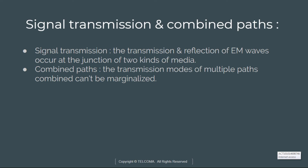Signal transmission refers to the transmission and reflection of EM waves which occur at a junction of two kinds of media. The transmission energy is related to the dielectric constant, movement, and permeability of the penetrated material.